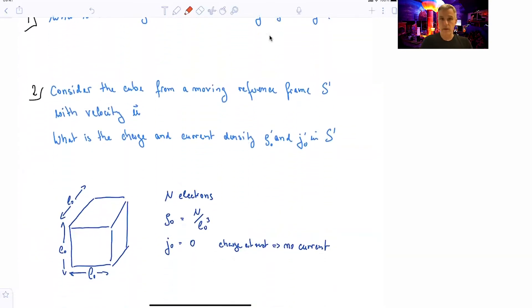OK, so now we look at this cube. The total number of charges is n. The length or the volume is L0 cubed. And so the density is n divided by L0 cubed. The current is 0. Nothing is moving. There are no moving charges. The current is 0.